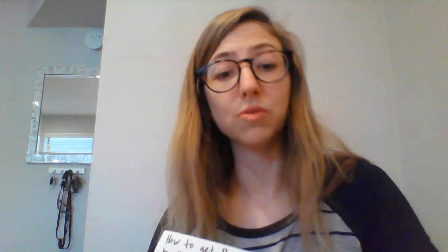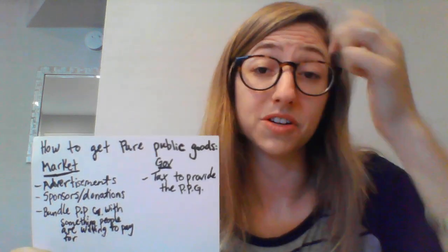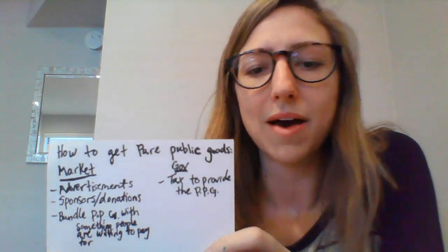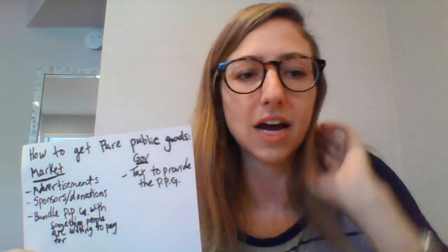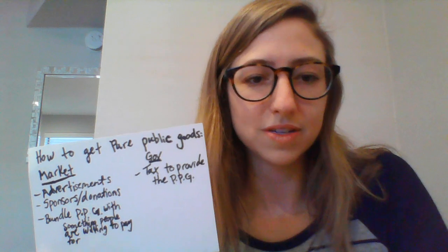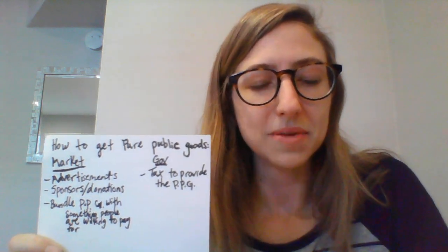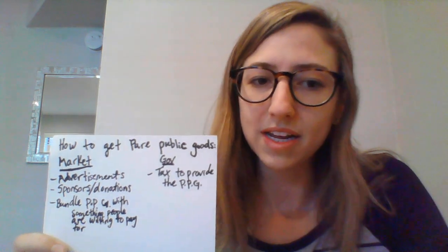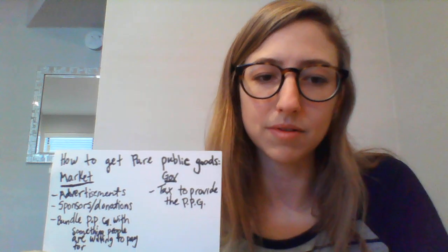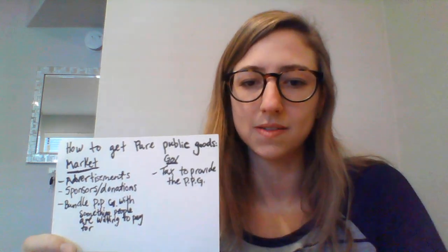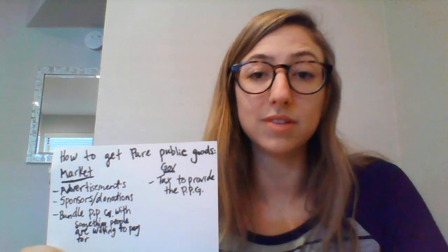We have our free rider problem, so solutions — we have market and government solutions, as with all of our market failures. If we think about radio stations, in the United States, radio stations are funded almost entirely by advertisements, as well as how YouTube is funded. The companies that buy advertisements on the radio pay the radio station money, and the radio station uses that money to pay the salaries of workers and infrastructure costs, and the radio station gets provided and you can listen to it without paying.